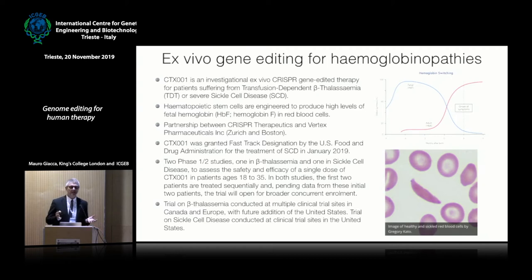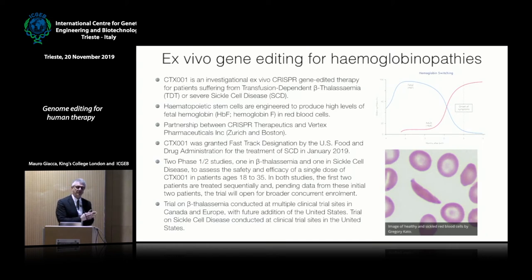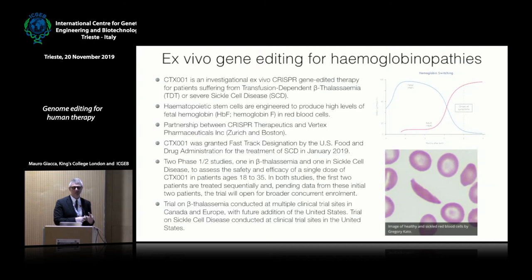The first lesson learned from gene therapy was that it is very difficult to do gene therapy in vivo, while it is much more easily done by transferring genes ex vivo in cells that you can culture in the laboratory. There are two kinds of cells you can culture and then retransplant into patients: hematopoietic cells themselves and lymphocytes. Not by chance, the first clinical gene editing trials are in these cells.